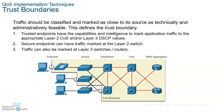Trust boundaries: traffic should be classified and marked as close to the source as technically and administratively feasible. You want to mark all your data just before it leaves — at the first router it hits. That's where you want to mark it, as close as possible to the source.